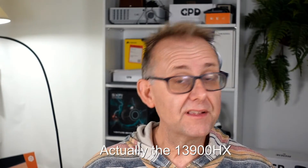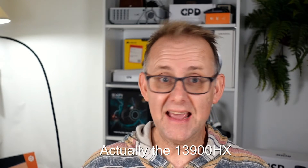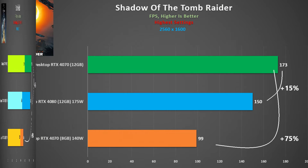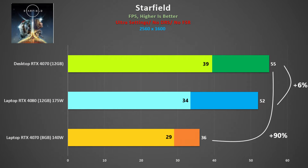The i7-12700K copes better than the mobile 3980HX in this title. In Shadow of the Tomb Raider, using the inbuilt benchmark, the desktop 4070 saw a 15% boost over the laptop 4080, and a whopping 75% boost over the laptop 4070. In Starfield, the desktop 4070 was 90% faster than its mobile counterpart, which is criminal, really. The mobile 4080 is much closer and should be the true mobile 4070.